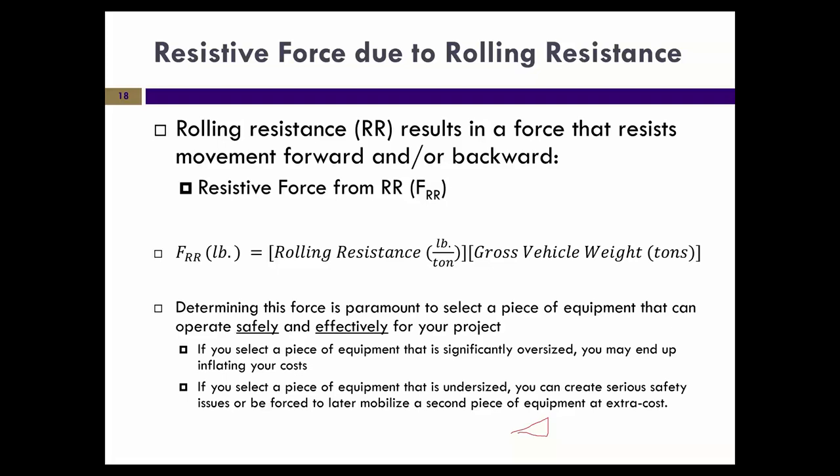The resistive force is rolling resistance multiplied by gross vehicle weight — the weight of the vehicle plus the load. If you use a vehicle that is too powerful for your site, the work gets done but it might cost too much. If you use a vehicle that is underpowered, it will either be operated unsafely or won't keep up with production requirements, and that's also going to cost you.